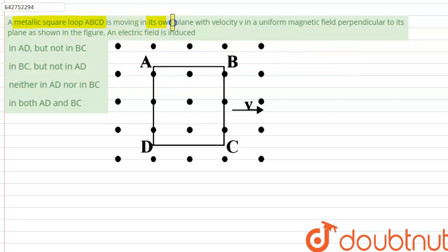As shown in the figure, an electric field is induced: in AD but not in BC, in BC but not in AD, neither in AD nor in BC, or in both AD and BC. So the question is asking us to find out in which side of the square loop there will be an induced electric field.